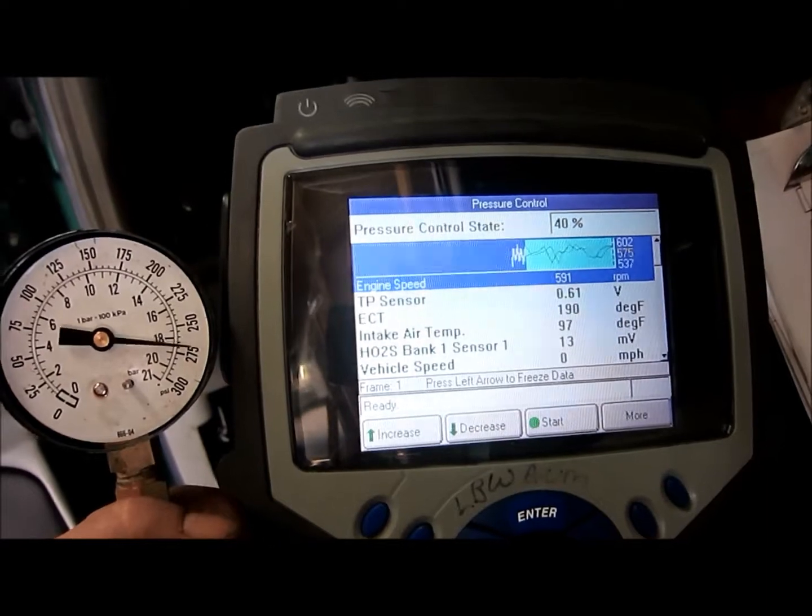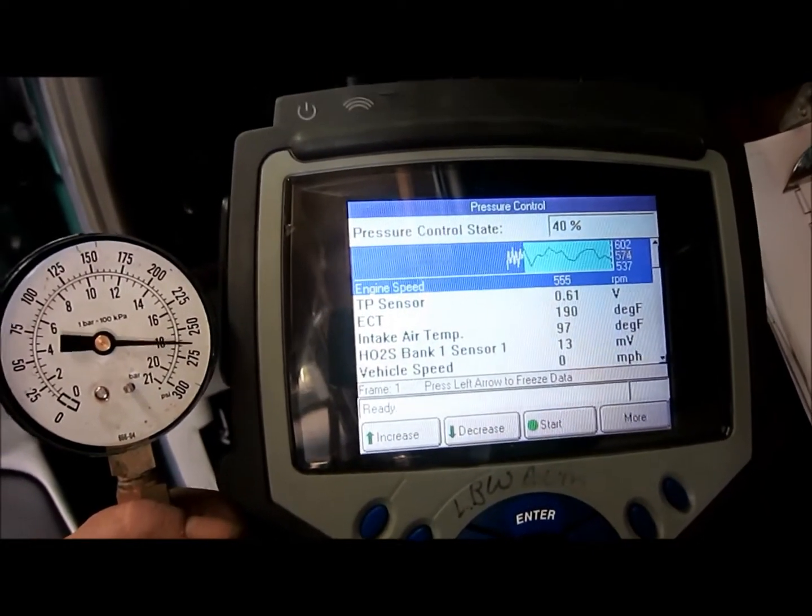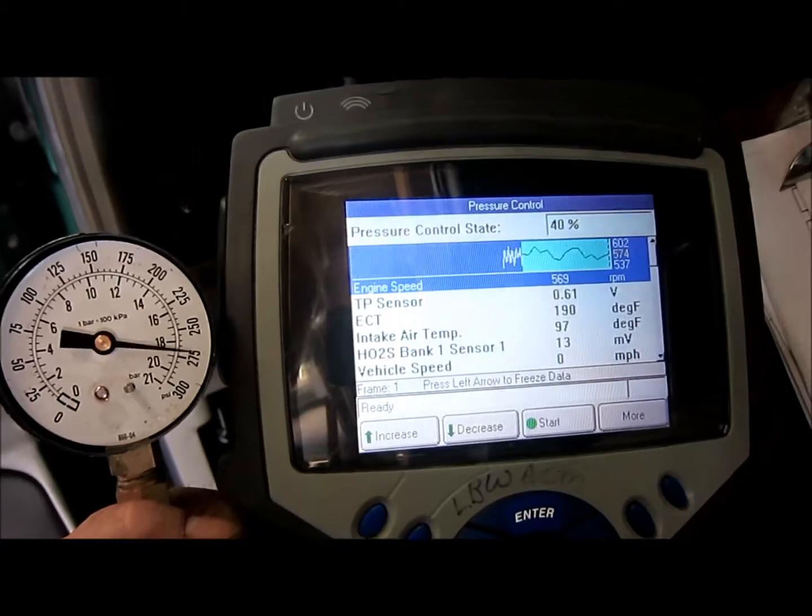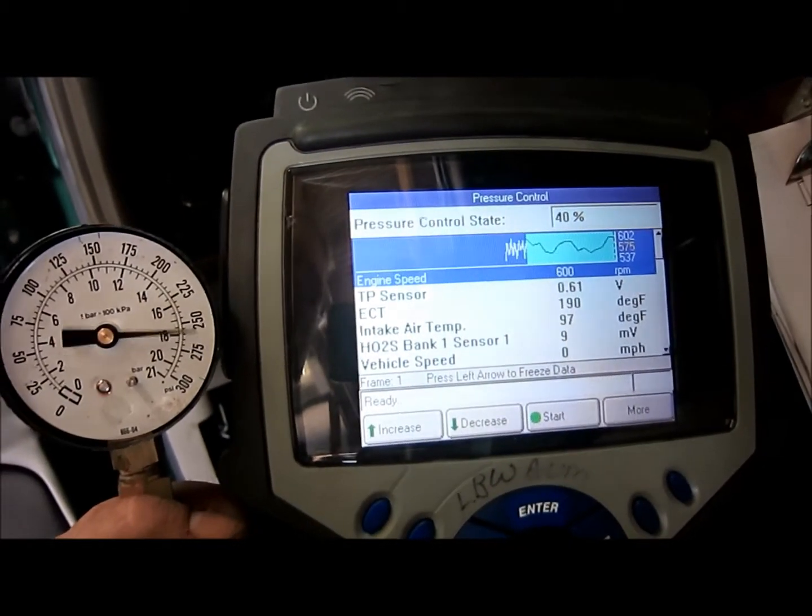The gauge is connected to the line pressure test port on the transmission. So Nicholas, which way is the pressure going to go when you increase the percentage of pressure control?